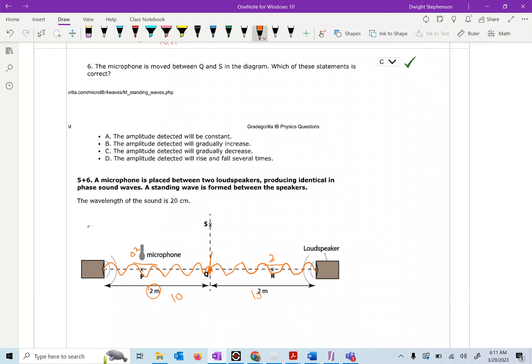When they reach this point, the path difference—both these waves have traveled the same distance, so the path difference is zero, which means you're going to get constructive interference here, and that means you're going to have an anti-node here.